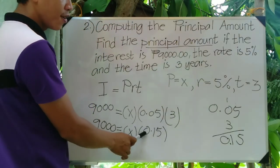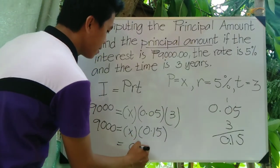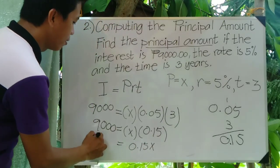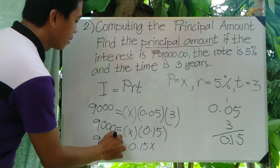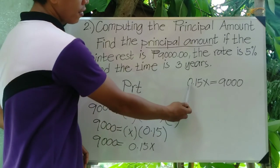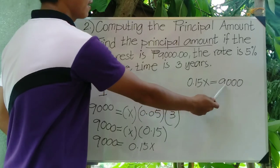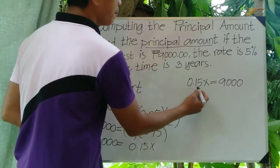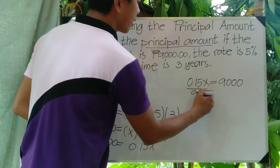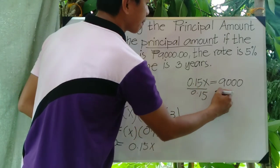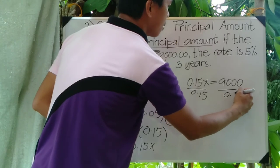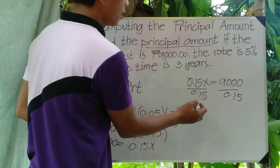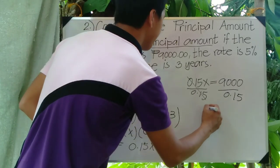Bringing it together, we have 0.15x equals 9,000. To find the value of x, we divide both sides by 0.15. The 0.15 cancels out on the left, leaving x, and we have 9,000 divided by 0.15 on the right.